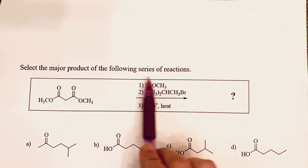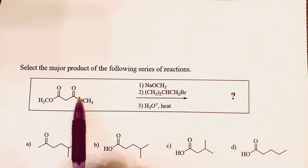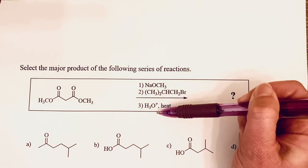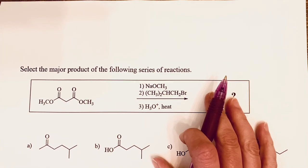Select the major product of the following series of reactions. If we look at our starting material, we can see that we have two esters. Let's go step by step. In the first step we have sodium methoxide.